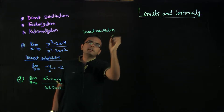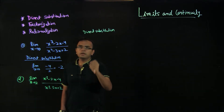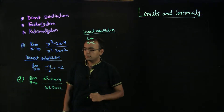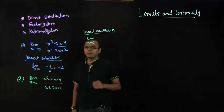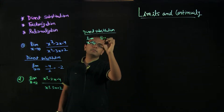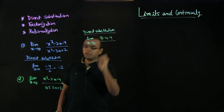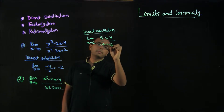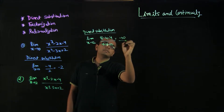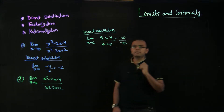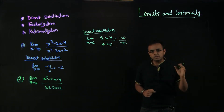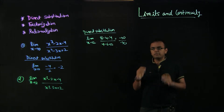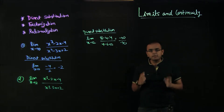If we do direct substitution with x = 2, we get 8 minus 4 minus 4 in the numerator, which is 0, divided by 4 minus 6 plus 2 in the denominator, which is also 0. So this is approaching 0 by approaching 0 — an indeterminate form. Whenever you see approaching 0 by approaching 0, this is an indeterminate form and you have to do something to solve the problem.